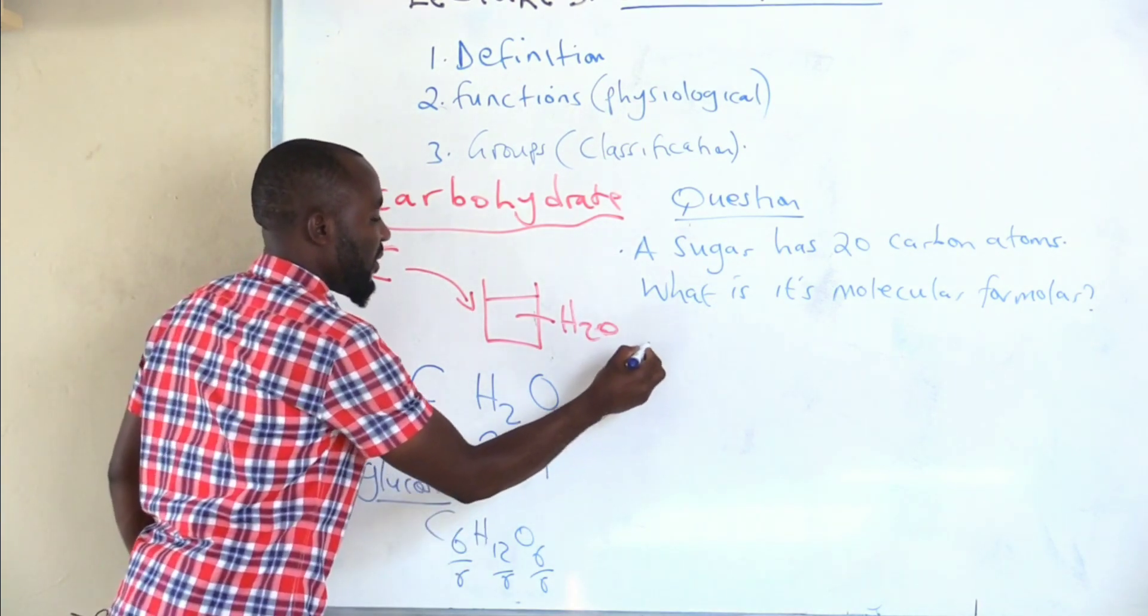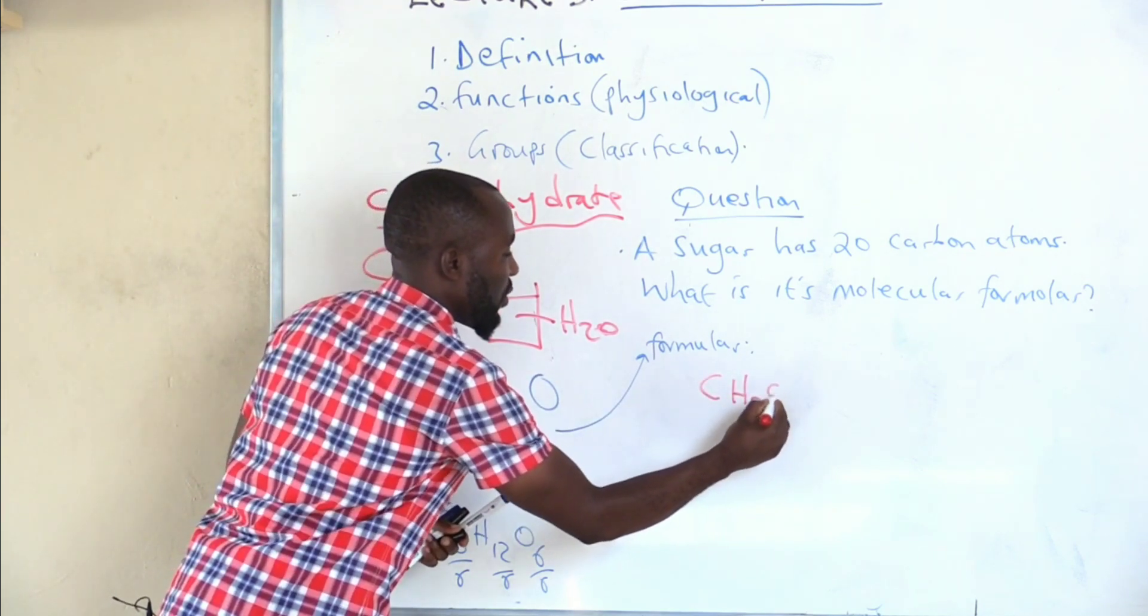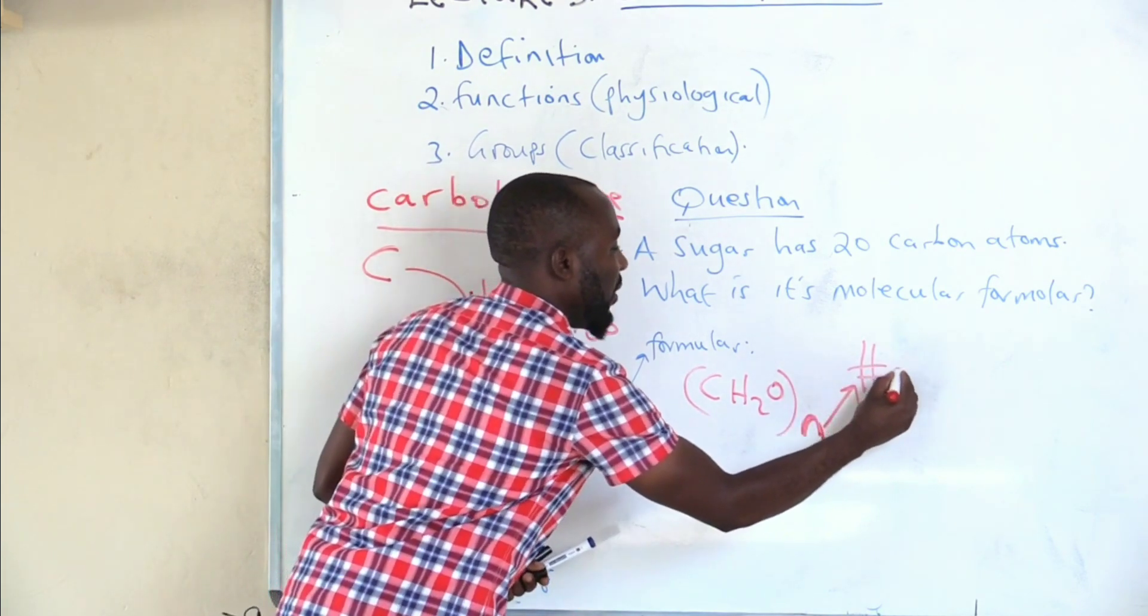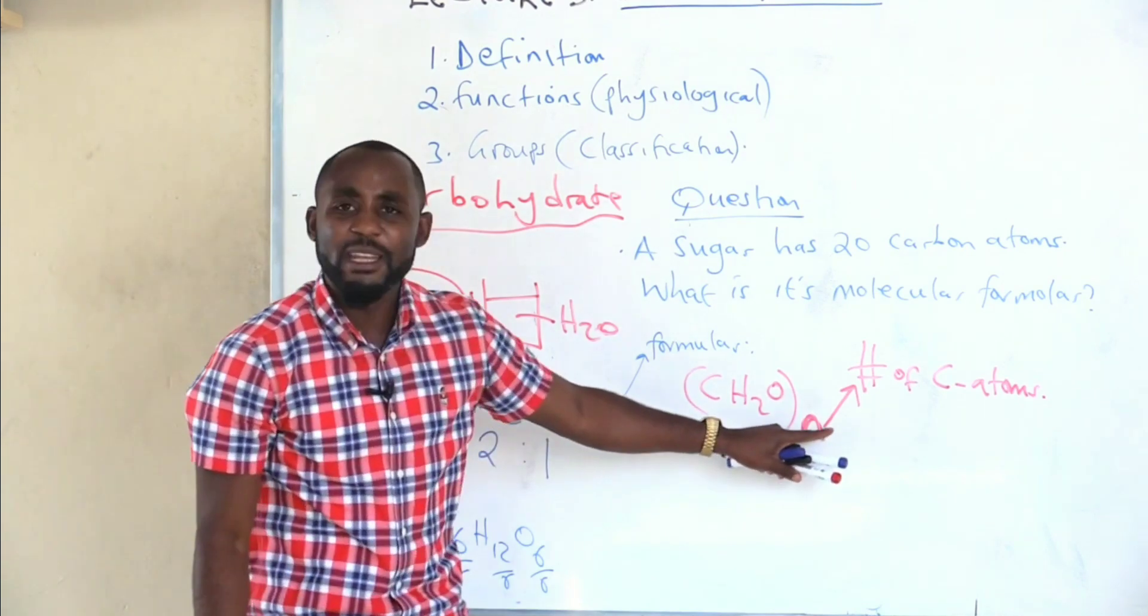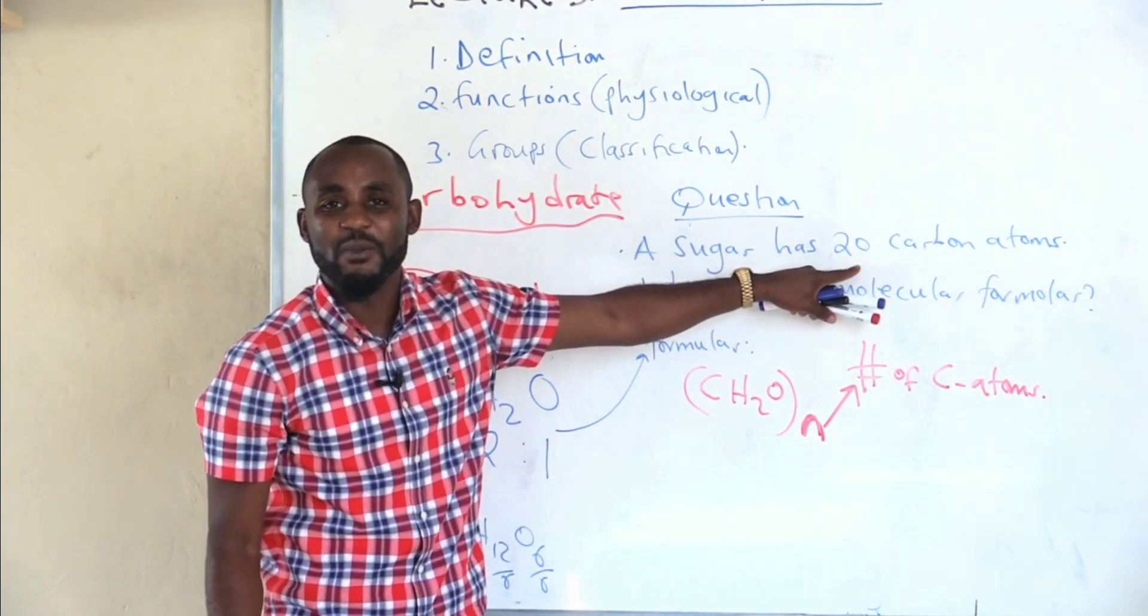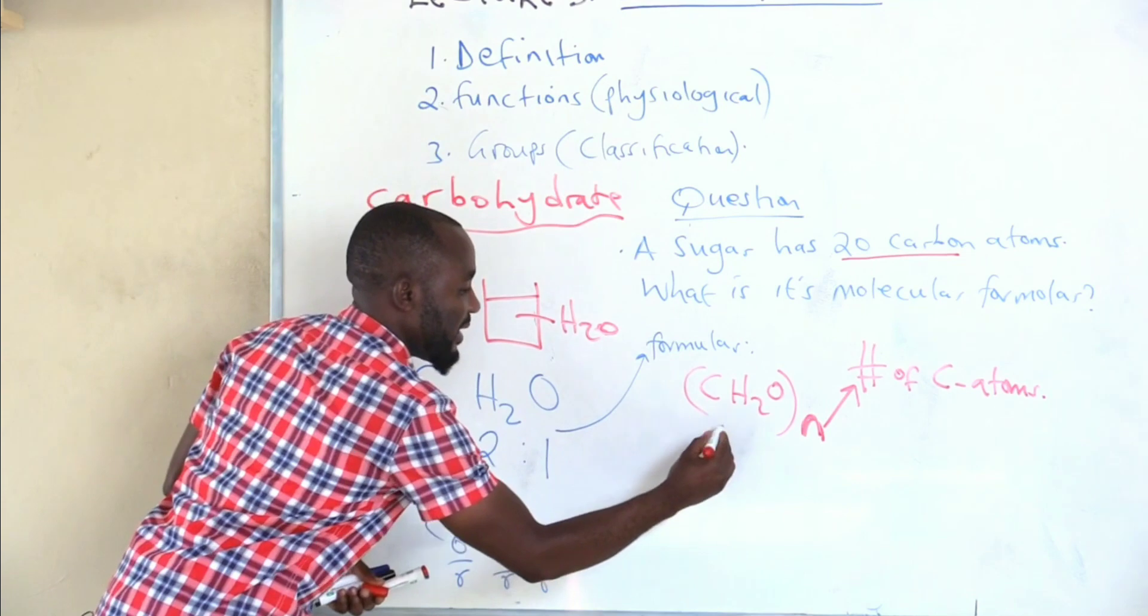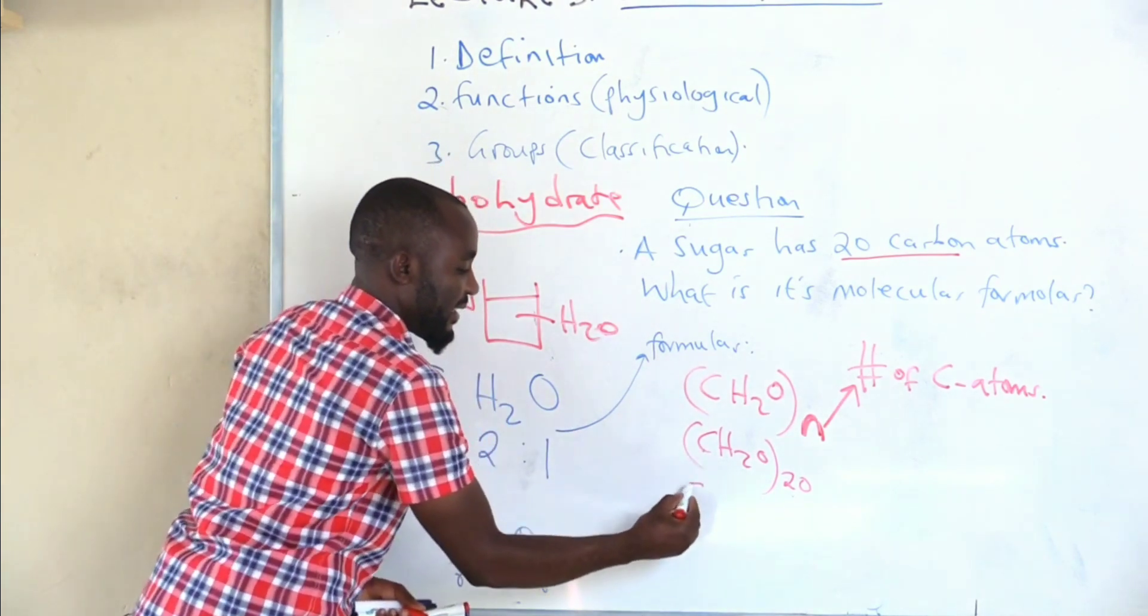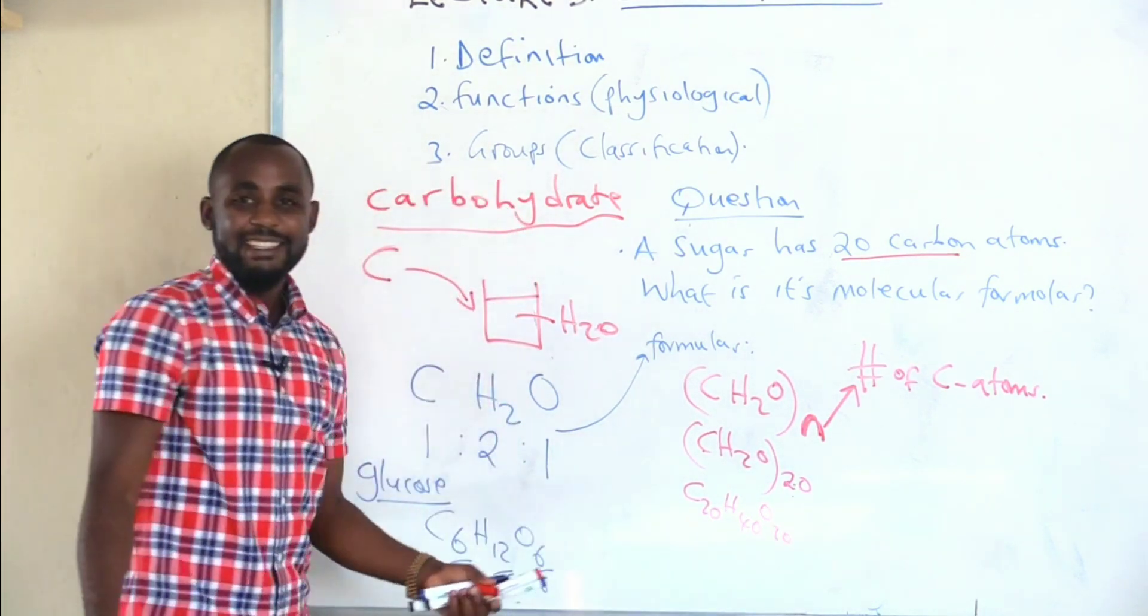If N stands for the number of carbon atoms, and we are saying that this sugar has 20 carbon atoms, what is its formula? All you do is get the number of carbon atoms, 20, and put it where there is N. So it will be CH2O20. Then start multiplying throughout. 20 by C, C20. 20 by H2, H40. 20 by O, O20. That is the molecular formula.